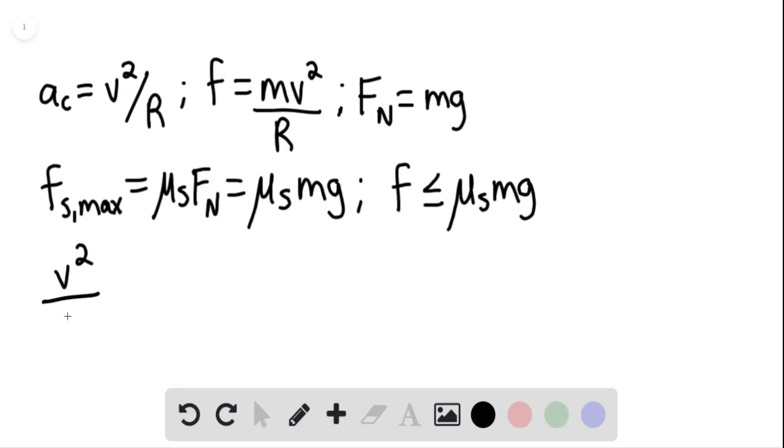This means v squared over r must be less than or equal to the coefficient of static friction times g. Therefore, r must be greater than or equal to v squared divided by the coefficient of static friction times g.